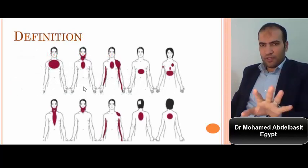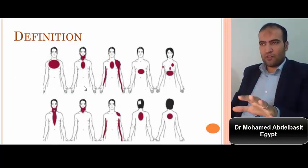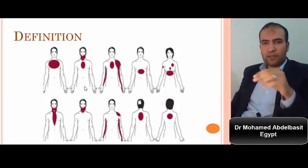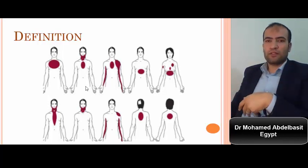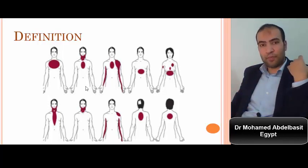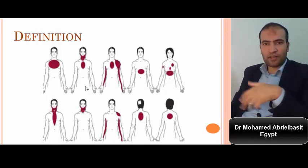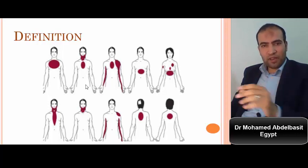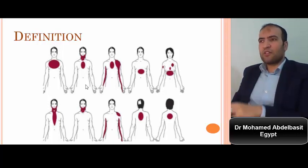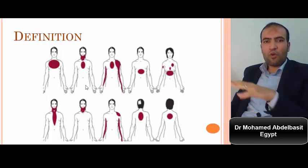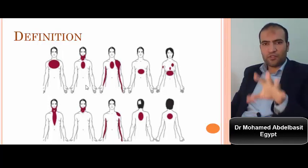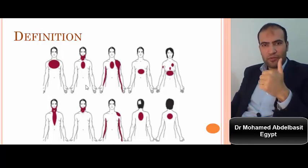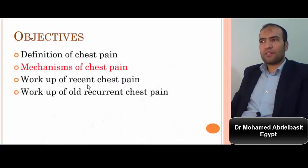As a cardiologist, we must respect all pain from the jaw to the umbilicus — in front, in back, or in either arm. Any pain in such an area must be respected as cardiac pain until proved otherwise. All guidelines recommend ruling out cardiac pain first, then searching for non-cardiac causes.